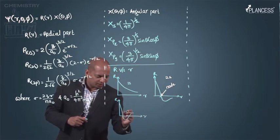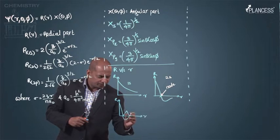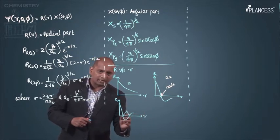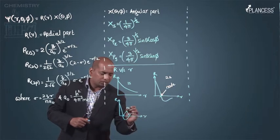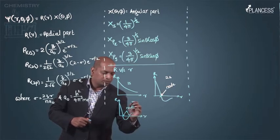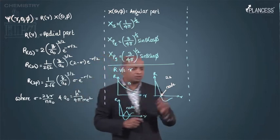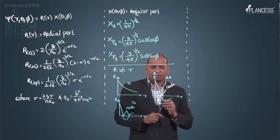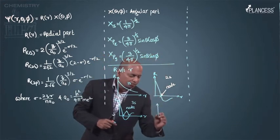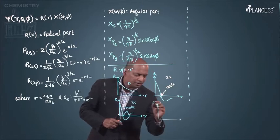If you observe carefully, we now have two nodes. This graph where it is cutting the x-axis - that is called a node. For 3s orbital we have two nodes. For 2s orbital we have one node.